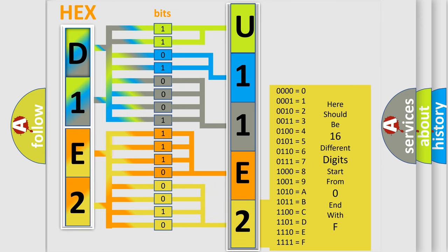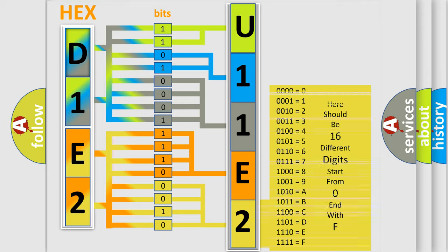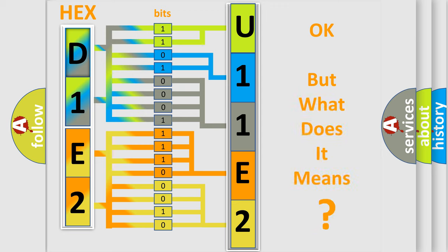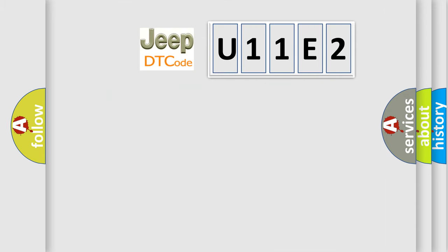We now know in what way the diagnostic tool translates the received information into a more comprehensible format. The number itself does not make sense to us if we cannot assign information about what it actually expresses. So, what does the diagnostic trouble code U11E2 interpret specifically for Jeep car manufacturers?